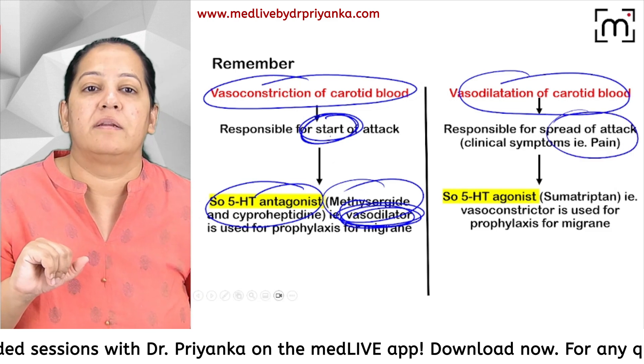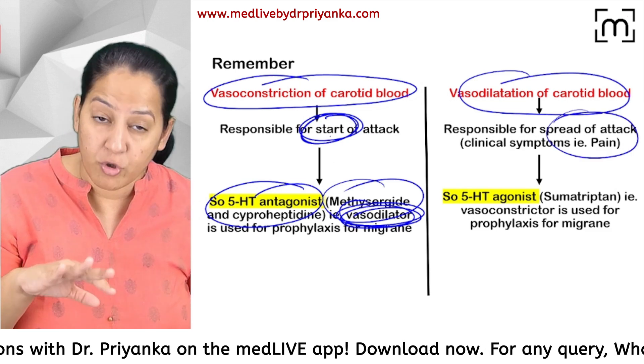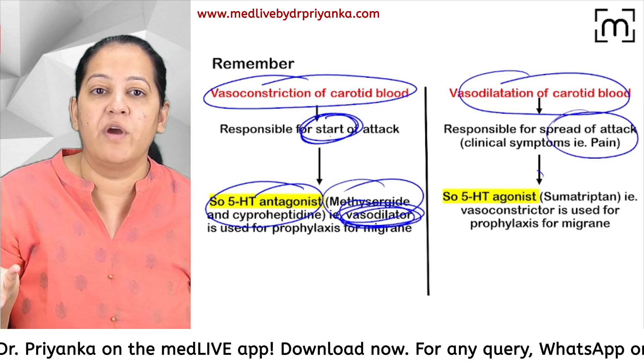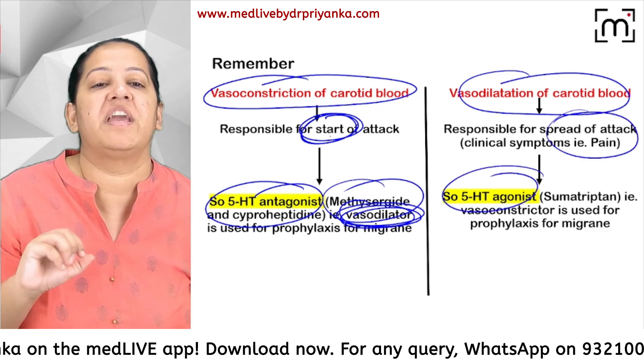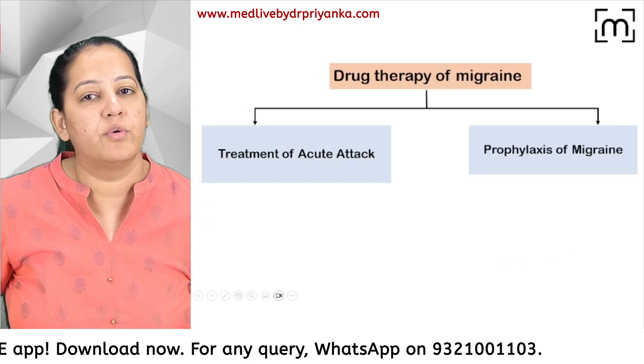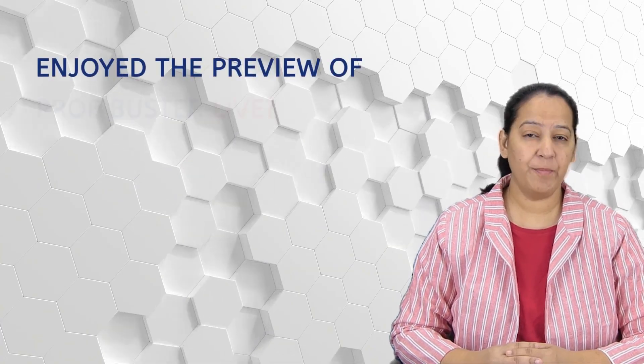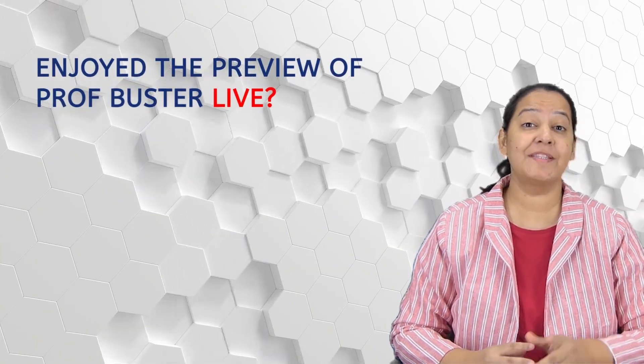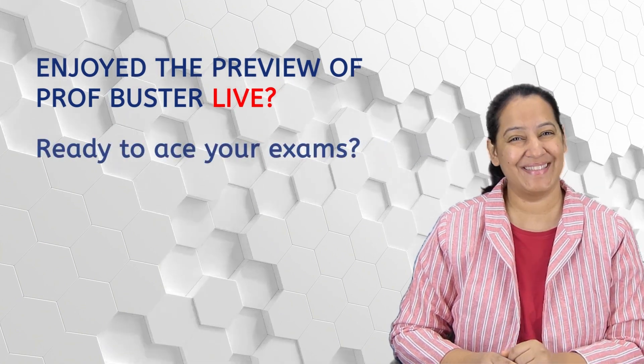Vasodilation of these blood vessels and shunts is responsible for the pain. To treat the pain, give a 5-HT agonist — that is sumatriptan or ergot. For prophylaxis, give methysergide. That is the complete treatment concept.